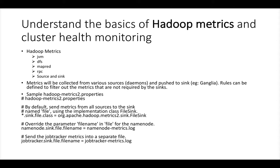So first let us understand what are Hadoop metrics. Almost all the processes like data node, name node, resource manager, node manager, etc. run in the form of JVM. So we will get metrics at the JVM level. For each JVM we get metrics at the service level such as DFS, MapReduce, etc.